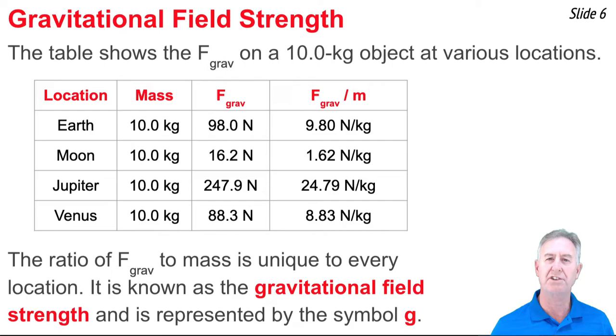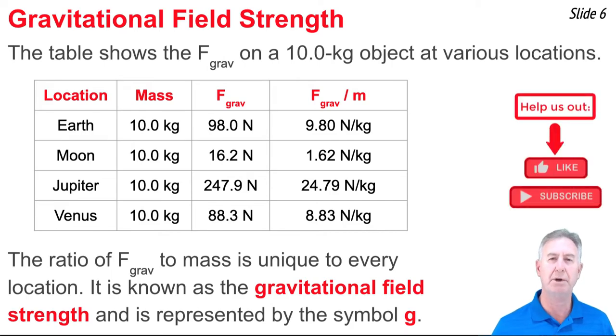So what is it that causes the weight of a 50 kilogram person to depend upon the location where it's at? Why is it different on different planets? The answer is obviously tied to the topic of gravitation or gravity. After all, the weight of an object is the force of gravity acting upon the object.